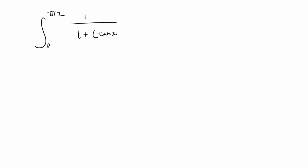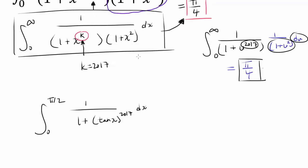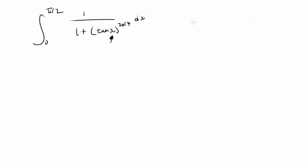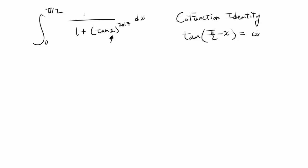We have the integral from 0 to π/2 of 1 over (1 + tan^27(x)) dx. In the last video we made the substitution u = 1/x because we had everything in the denominator, and that forced a useful term into the numerator. But in our case, u = 1/x doesn't really work because tan(1/u) isn't simplified — it's not getting us anywhere. You may remember the co-function identity for tangent: tan(π/2 − x) = cot(x).